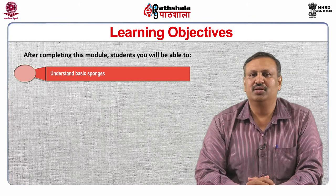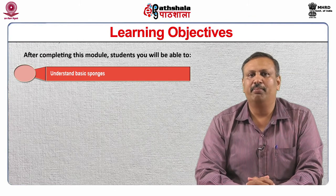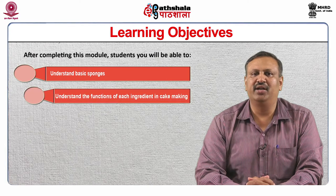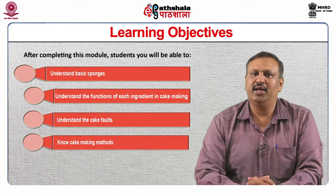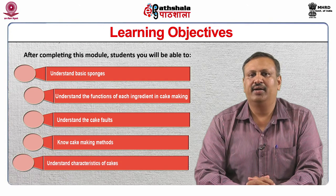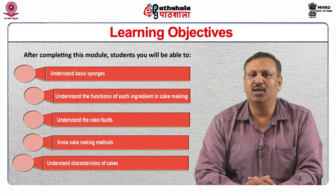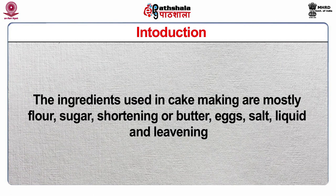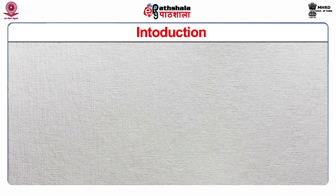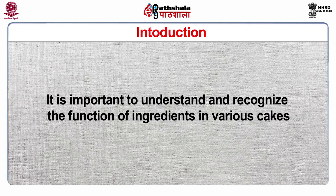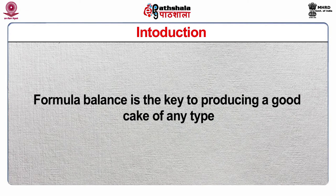After the completion of this module, the learners can understand about basic sponges, their functions of each ingredient in cake making, able to understand the cake faults, able to know cake making methods, understand characteristics of the cakes, and balancing of cake formula. The ingredients used in cake making are mostly flour, sugar, shortening or butter, egg, salt, liquid and leavening. The ingredients may vary in kind, quantity and method used. It is important to understand and recognize the function of ingredients in various cakes. Formula balance is the key to producing a good cake of any type.